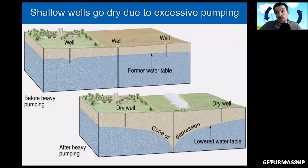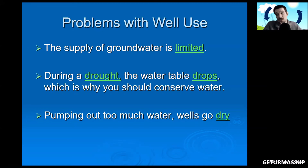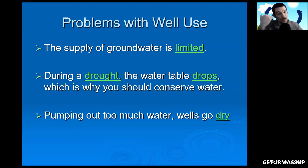Let's write down problems with well use: the supply of groundwater is limited. During a drought, the water table drops, which is why you should conserve water. Pumping out too much water will cause wells to go dry.